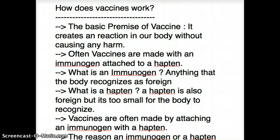Often vaccines are made with an immunogen attached to a hapten. What does that really mean? Before we get onto it, let's talk about what is an immunogen. An immunogen is anything that the body recognizes as foreign, where a hapten is also foreign, but it's so small that the body cannot recognize it.